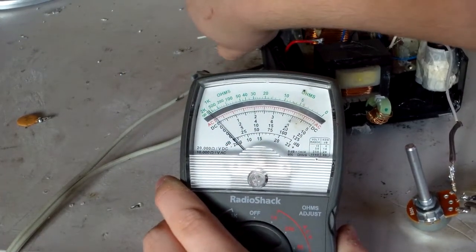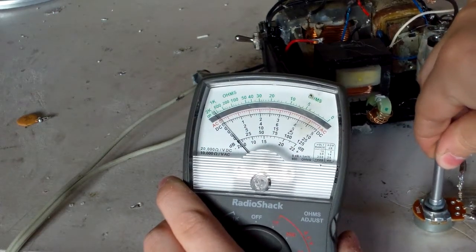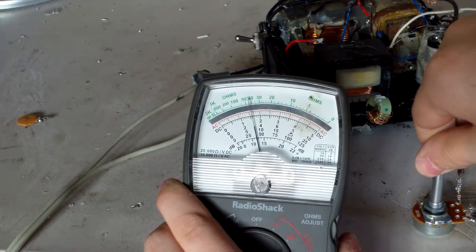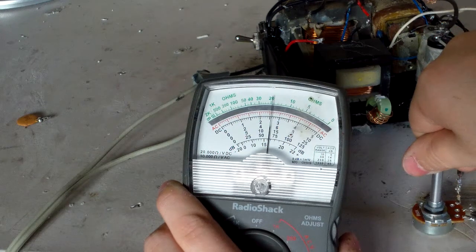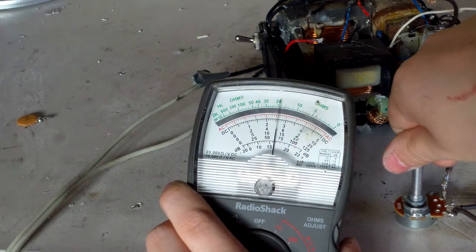Turn the supply on. Now turn up the potentiometer. Tops out at about, I'd say, 12 volts DC.